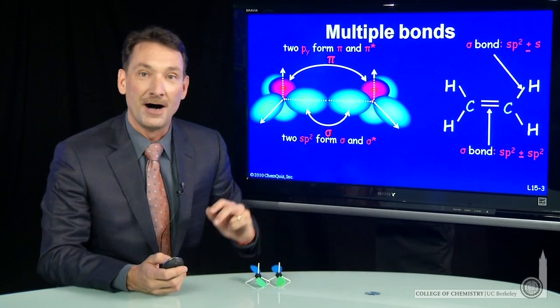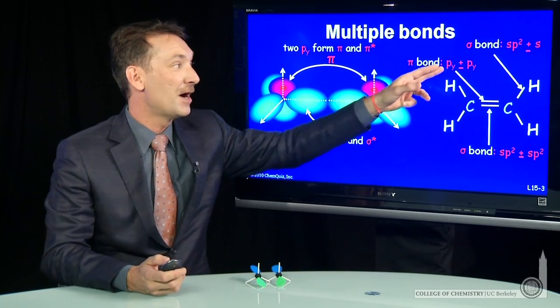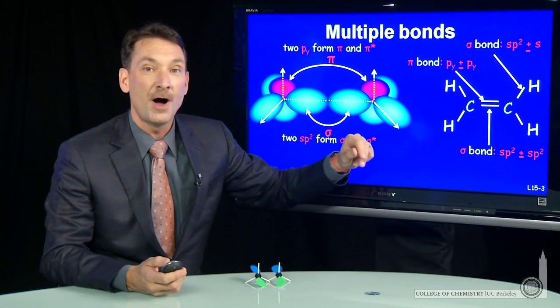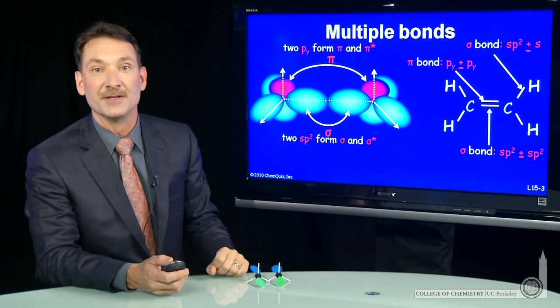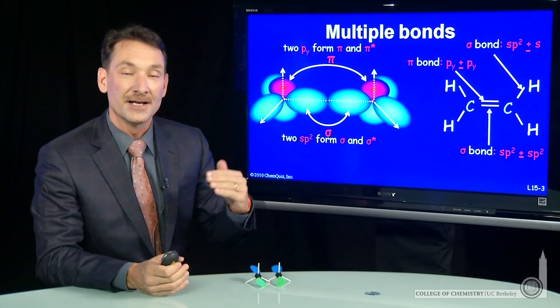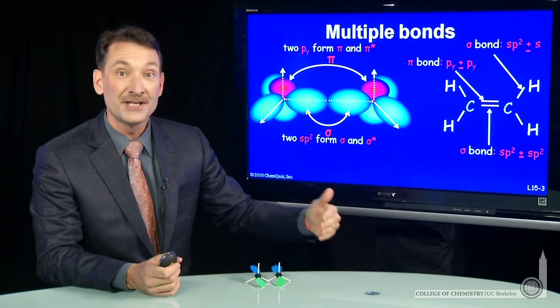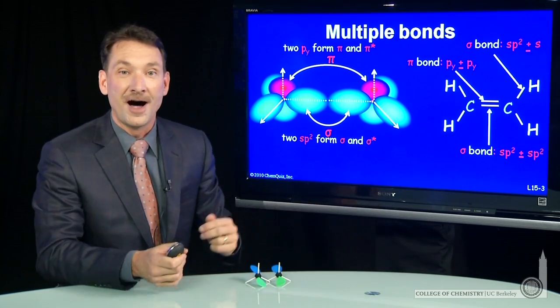The second bond being a pi bond formed from the overlap of py and py on the two carbons. So multiple bonds, a sigma and a pi bond, formed from a combination of hybrid orbitals and leftover p orbitals on carbon.